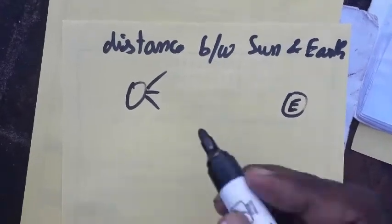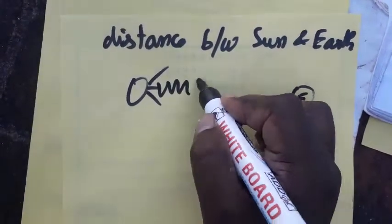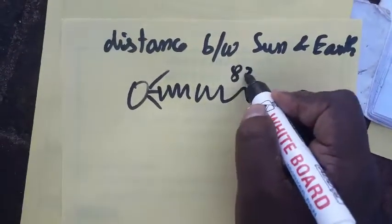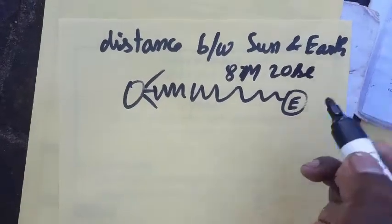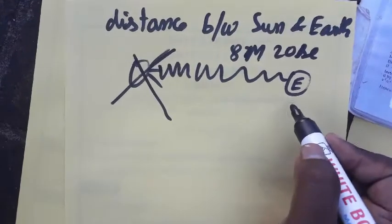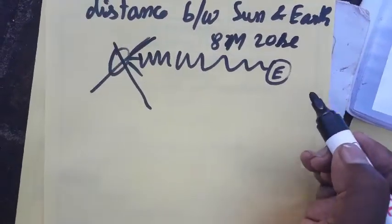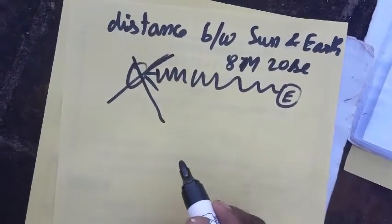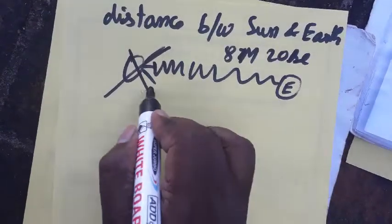The sunlight exactly takes 8 minutes 20 seconds to reach our earth. That means if the sun disappears now, after 8 minutes 20 seconds only you will feel and realize the sun is not there, because the time taken to reach from sun to earth is 8 minutes 20 seconds.